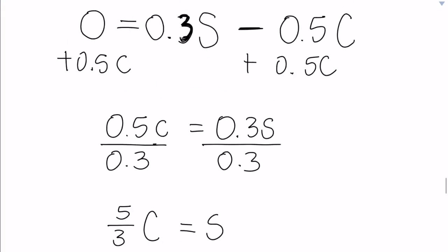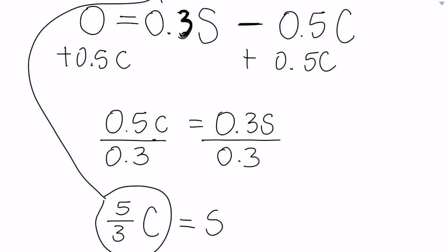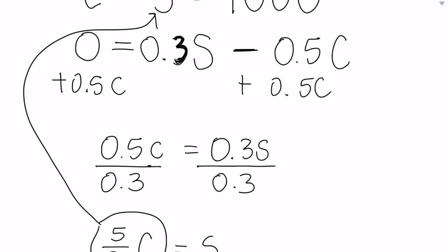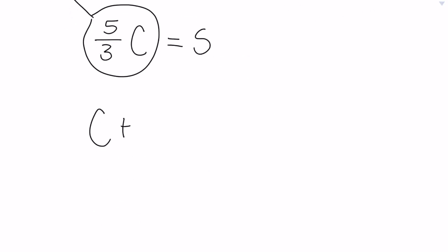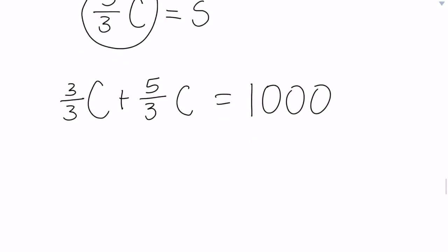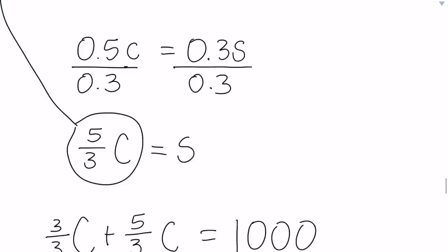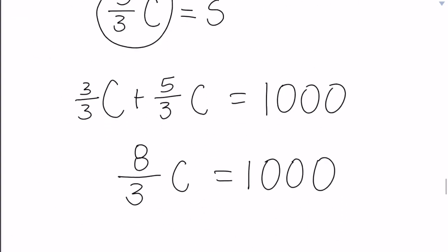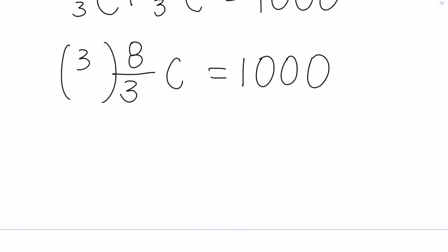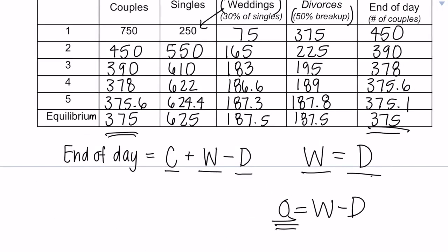Now I have something that equals S, and I can put this in over here, and that will let me simplify my variables here. So I've got C plus 5 thirds C equals 1,000. And remember that there's a 1 here, but instead of 1, you can write 3 thirds, same thing as 1. And we can add our C's together and end up with 8 thirds C equals 1,000. Because we're trying to find out how many couples we have, because remember that's the equilibrium number. And so if we multiply by our reciprocal, we end up with C equals 375, which is our equilibrium amount.